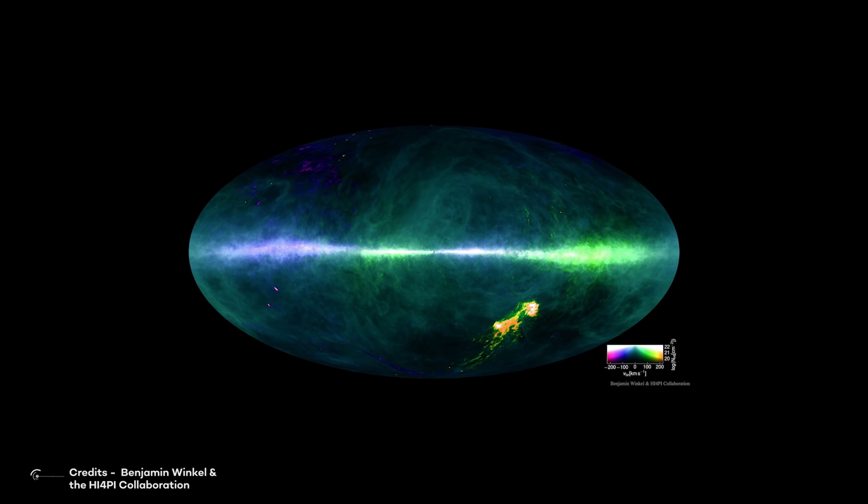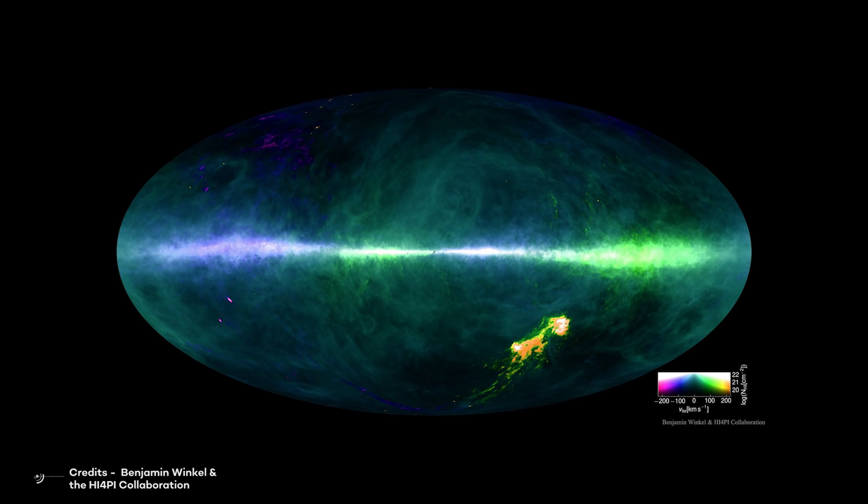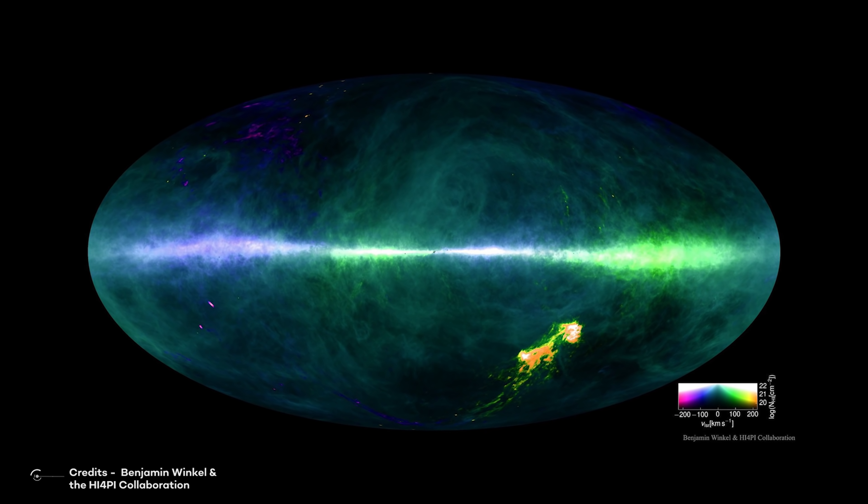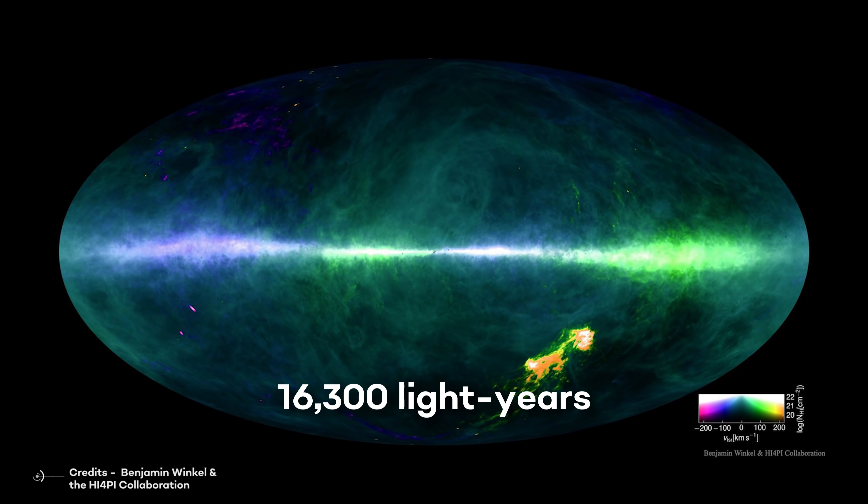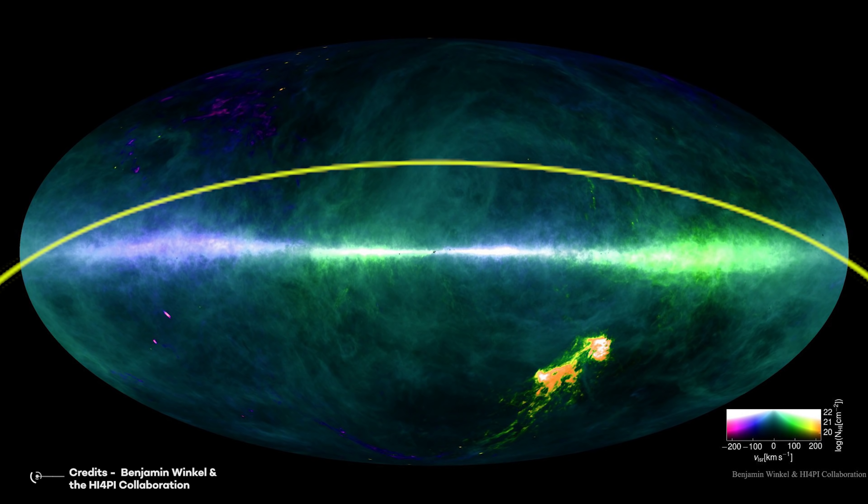But when astronomers combined the data with the HI-4PI All-Sky HI survey, they found that the cattail could be even longer, as long as 16,300 light-years. That would make it even more colossal than the gas structure known as the Gould's Belt, which was recently found to be 9,000 light-years long.